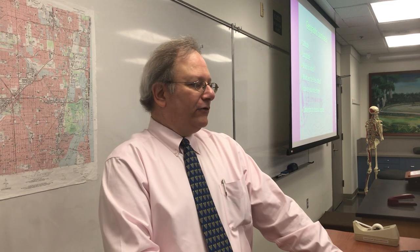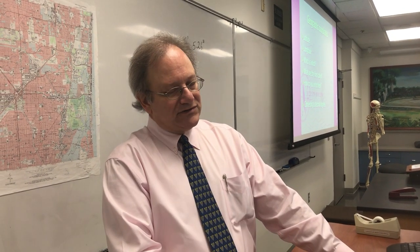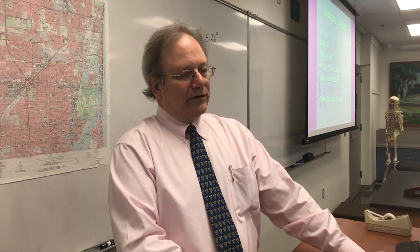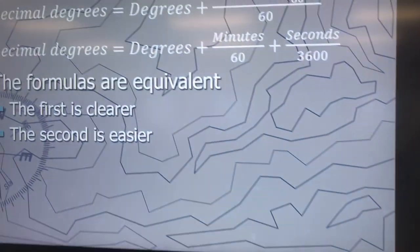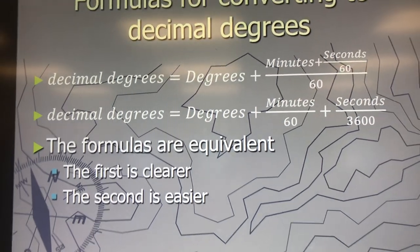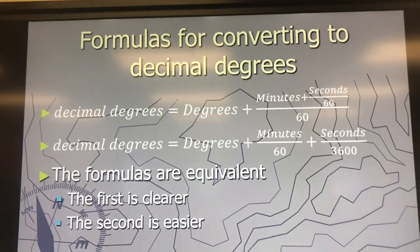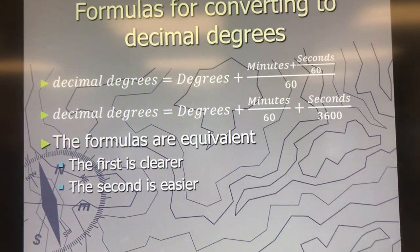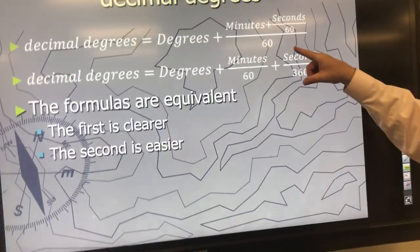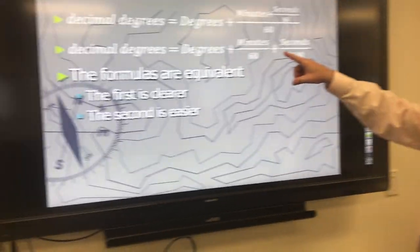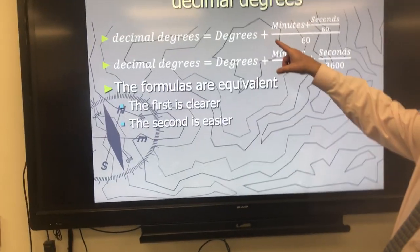That longitude — 80 degrees, 6 minutes, 5.26 seconds — we're going to convert to decimal degrees. So if you go to the next slide, I've presented two formulas for converting degrees, minutes, and seconds to decimal degrees. So if you take the number of degrees and add it to the number of minutes...